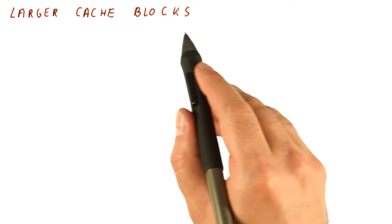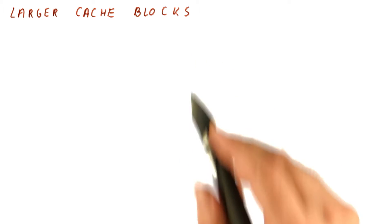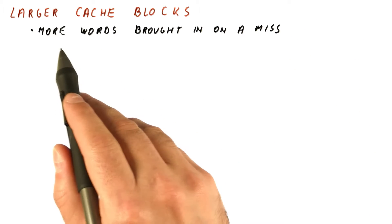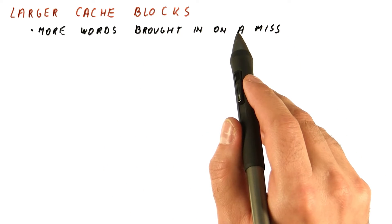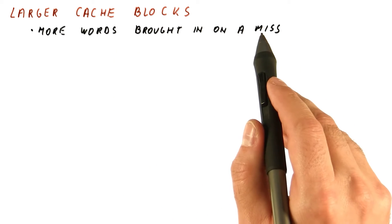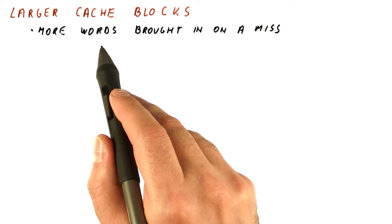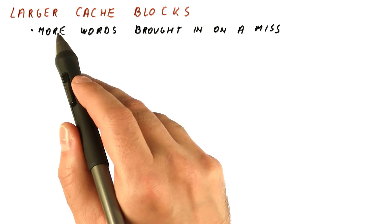The first technique for reducing the miss rate is using larger cache blocks. They help the miss rate because more words are brought in when we have a miss. Subsequent accesses that might access those additional words we brought in will not be misses, and they would be misses if we had a smaller cache block.